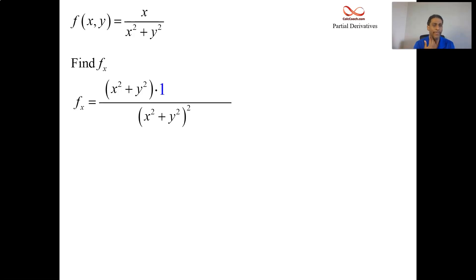Put a minus sign. Leave the top alone. Multiply by the derivative of the bottom with respect to x. So 2x. There's no y, like y² is treated like a constant. Its x derivative is zero.